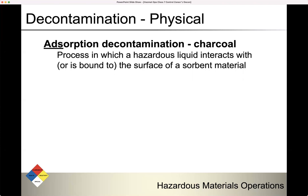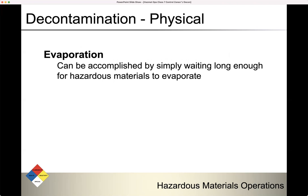Moving on to physical decontamination: this involves adsorption — different from absorption (absorb soaks up, adsorb binds to surface). An example would be charcoal. It's a process in which a hazardous liquid interacts with or is bound to the surface of a sorbent material at the molecular level. There's also evaporation decontamination, accomplished by simply waiting long enough for a hazardous material to evaporate. If it has a very high vapor pressure, the liquid will evaporate rather quickly and is no longer hazardous.